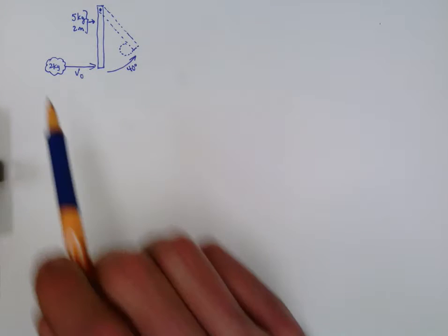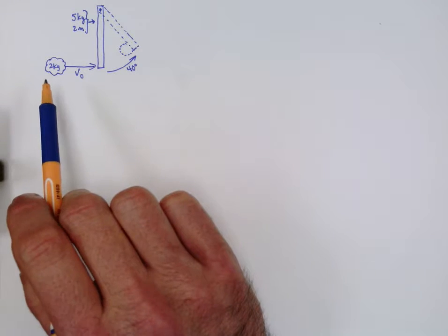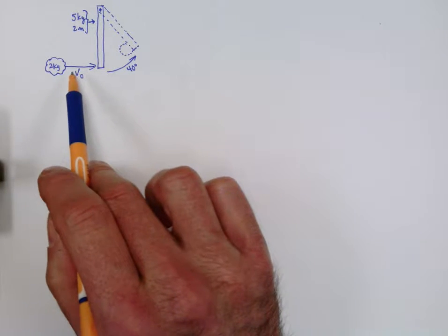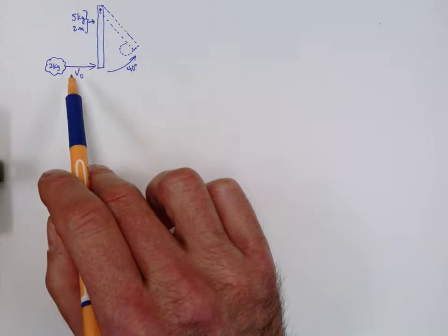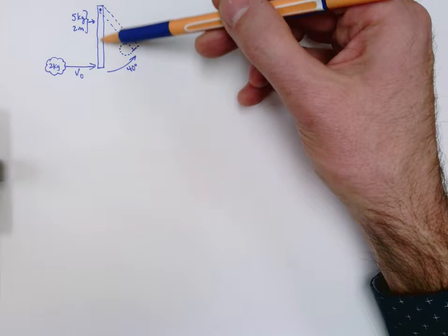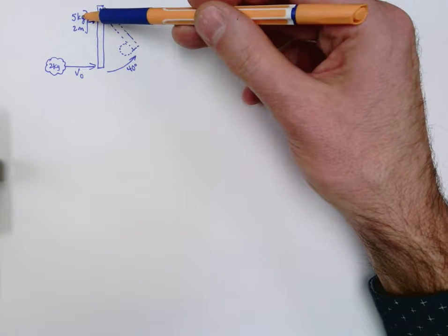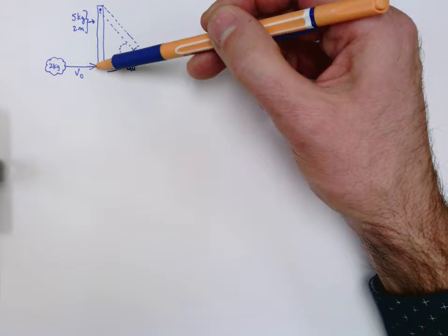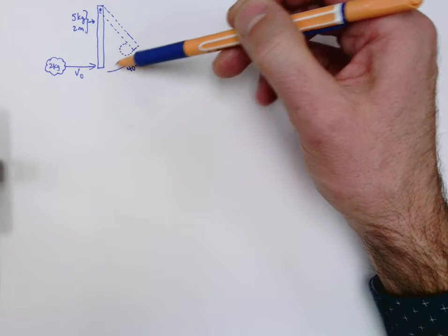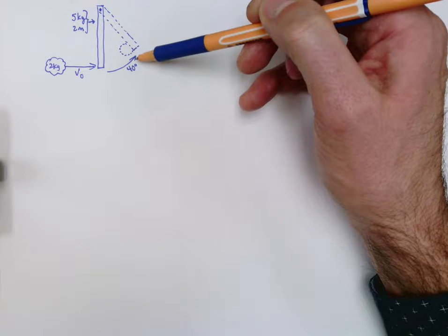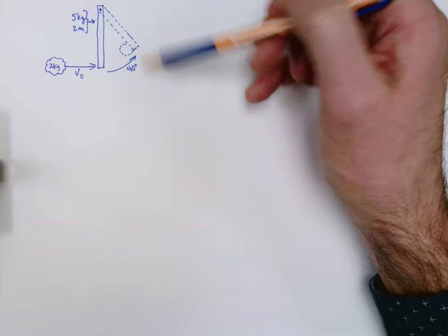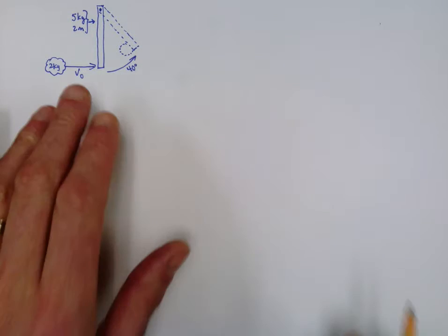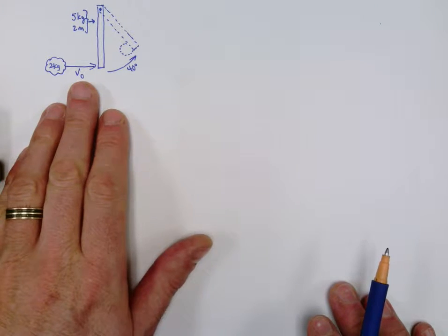Here we have a wad of clay, two kilograms in mass, and it has some initial velocity — that's what we want to find. This is a hinged stick with a mass of five kilograms and it's two meters long. When the wad of clay hits it, it sticks to it, and the two of them swing together up a 40-degree angle before they momentarily come to a stop. Our job is to figure out how fast the clay was going before the collision.